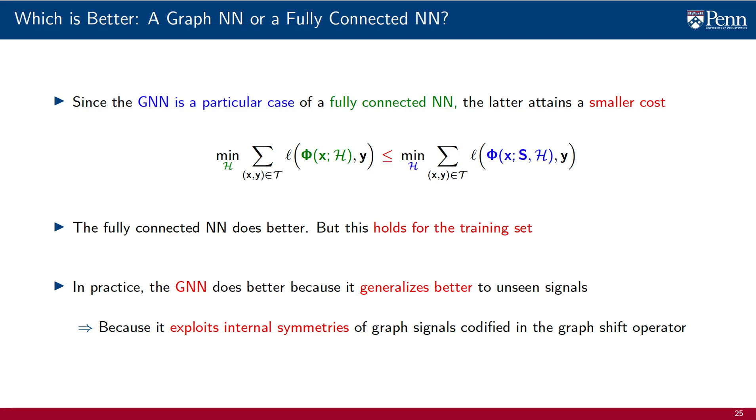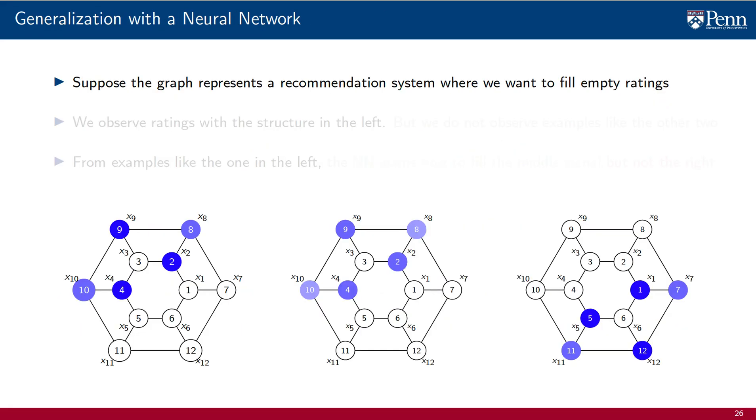We will therefore try to clarify with an example. The diagrams are a cartoon illustration of a recommendation system where the colored nodes represent available ratings. Our objective is to predict the ratings associated with the clear nodes.